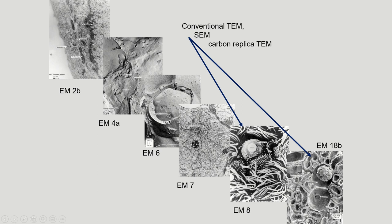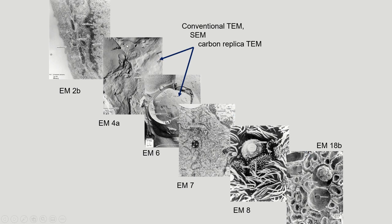The next type is scanning electron microscopy — it literally looks like you took a scanner and scanned over the tops of these cells, so it's a lot more 3D, you get a lot more depth, and it looks a lot more like a photograph. The third type is carbon replica transmission electron microscopy. The way I think of it is like making a play-doh mold — you take play-doh, smush it on the surface of something, peel it back, and look at what the play-doh captured. It gives you a lot of surface details and textures.